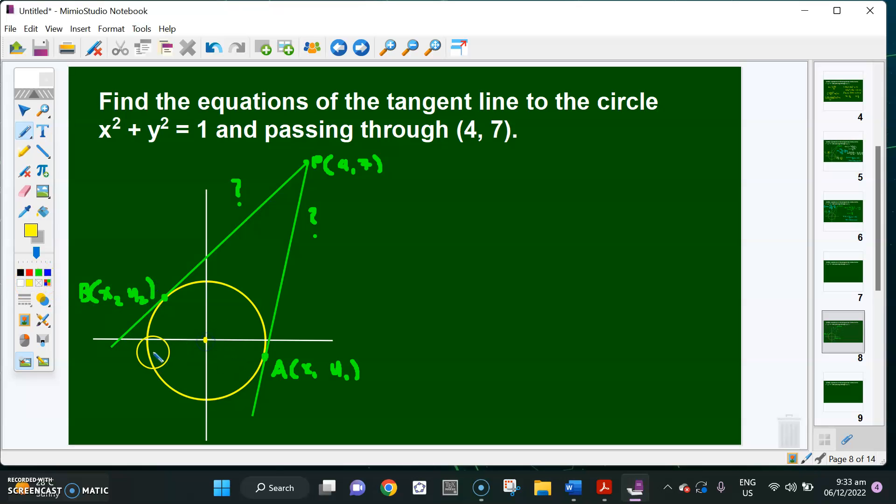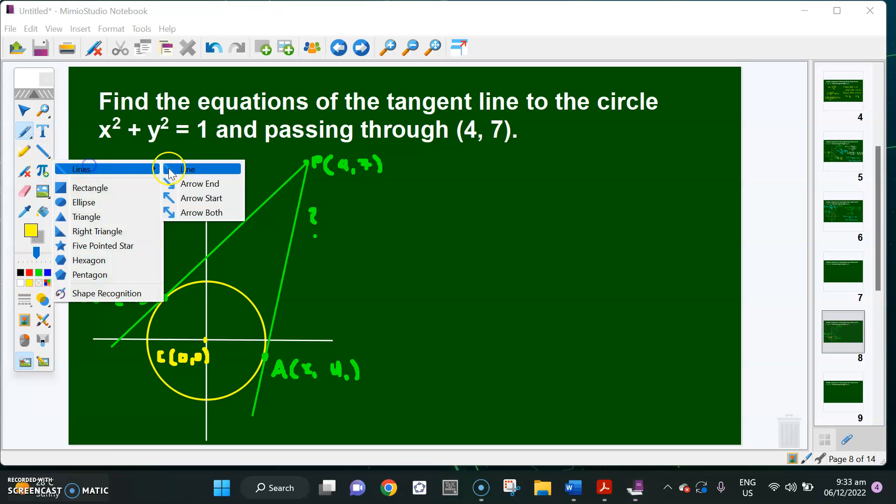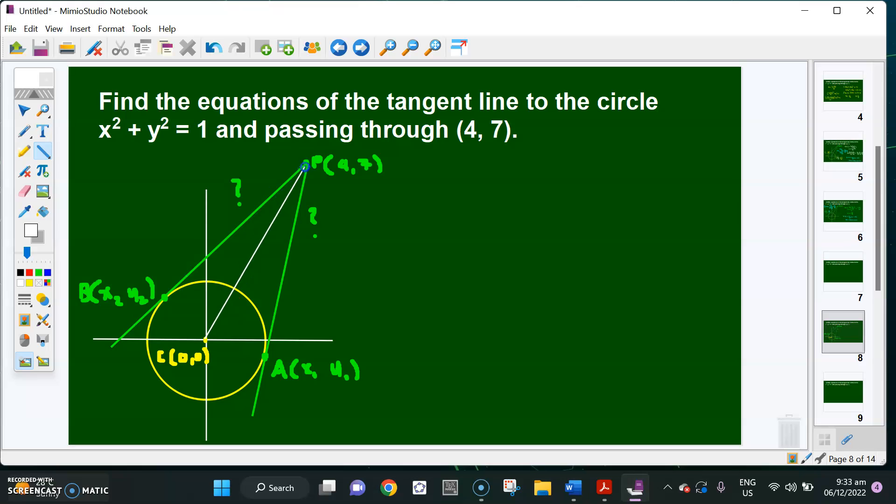Let me locate the center at (0, 0). What I'm going to do here is connect the lines. Connect point C and P, where C is the center and P is the external point. Now also as mentioned in the problem, since it's tangent, we know the fact that the radius is perpendicular to the tangent line as shown.